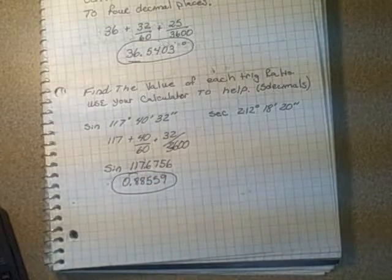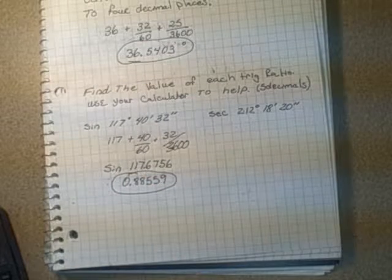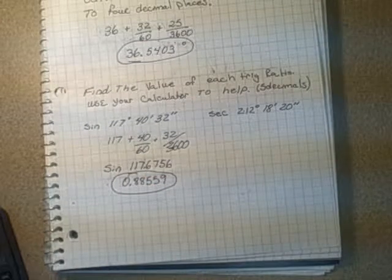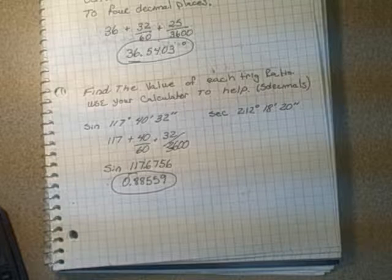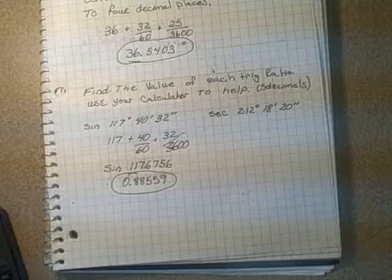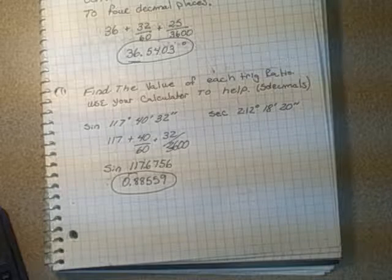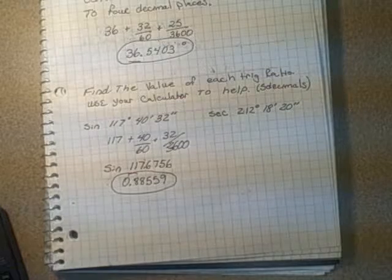Now that's a second quadrant angle. So it makes sense that sine would be positive in the second quadrant because sine is y over r. And the y value is still positive in the second quadrant. It's still going upwards.